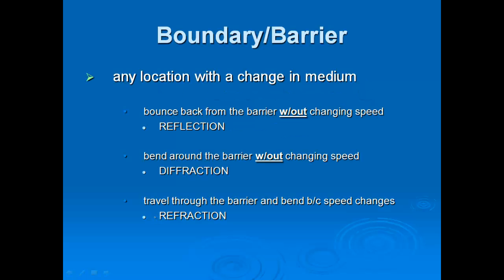First thing we need to talk about is boundaries or barriers. A boundary or barrier is any location that involves a change of media. We've heard of reflection, bouncing back from the barrier without changing speed. Diffraction, bending around a barrier without changing speed. And refraction, which is traveling through a barrier and bending because of the change of speed.